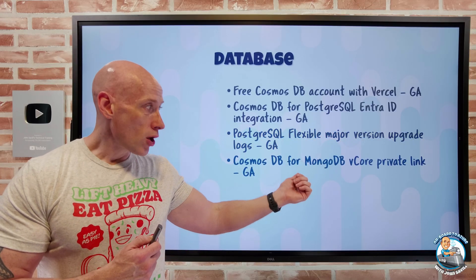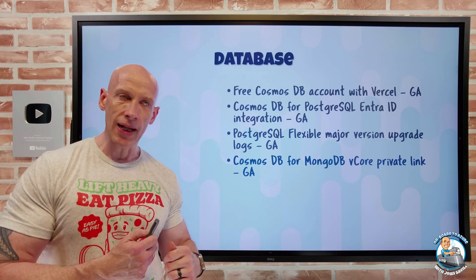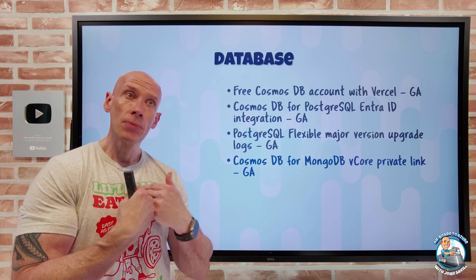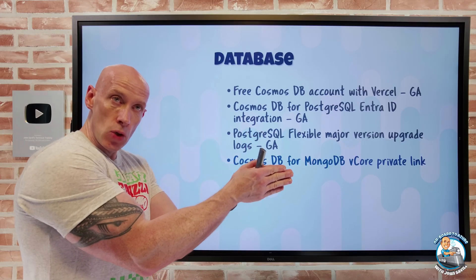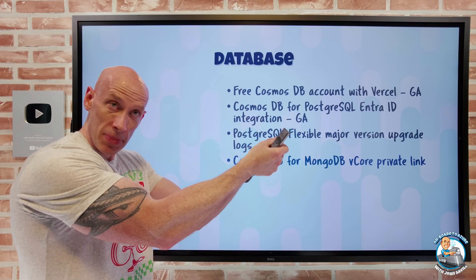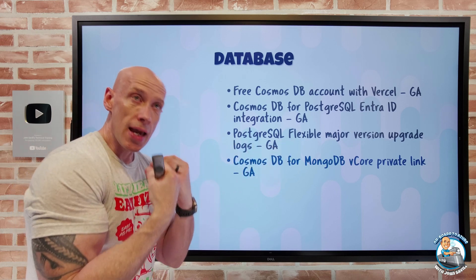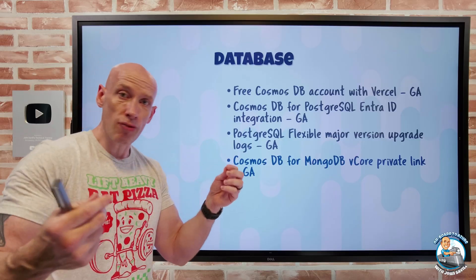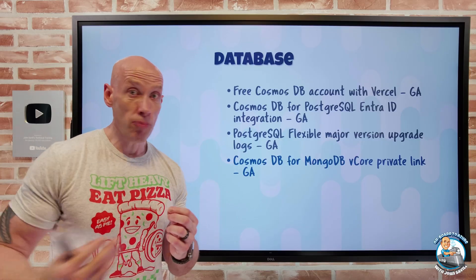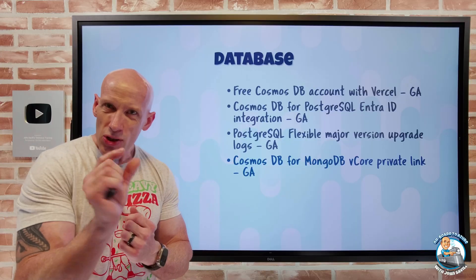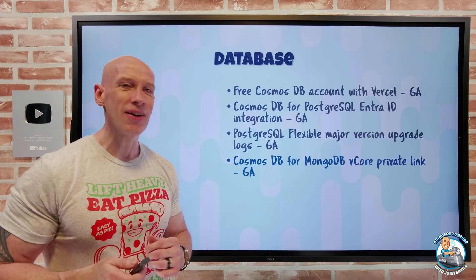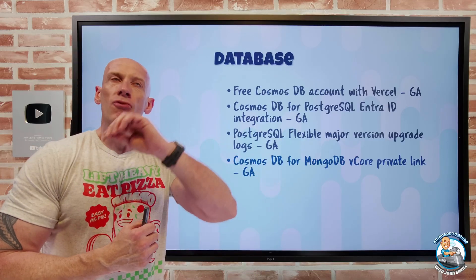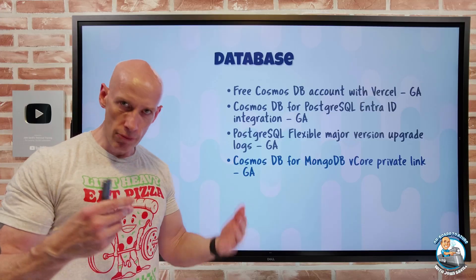Cosmos DB for MongoDB now has PrivateLink. PrivateLink lets you create an IP address in your virtual network that directly communicates with a specific service instance — not the public endpoint, which you can block. You can use that private endpoint from connected networks: peered, on-premises via site-to-site VPN, ExpressRoute, or private peering. Just make sure DNS and private zone configuration are set up correctly.